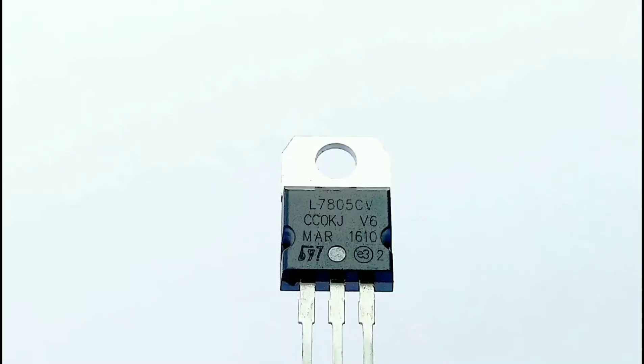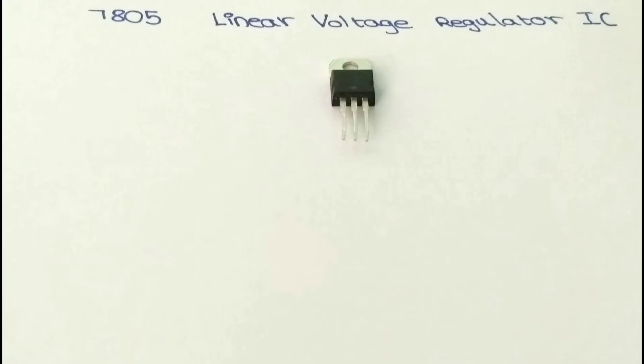So what is 7805 IC, what does it do, and how to use it? Let's find out. The 7805 IC is a linear voltage regulator, which means you can get a regulated voltage at the output if given an input supply within the specified range.